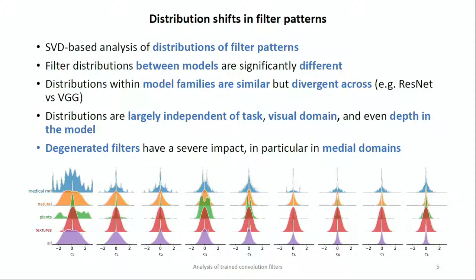If you take this across other families — comparing ResNet with VGG, for example — filters become very different again. But probably most interesting is that if you take all filters on average and compare them split by task, type of data the model was trained on, and depth of the filters, there are barely any differences — the distributions are very similar. The only difference you typically see is in the type of degenerated filters; some models have more degenerate filters than others. We found this is particularly common in medical models, which we thought would be very interesting to explore.